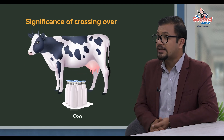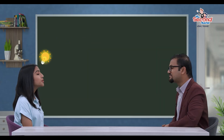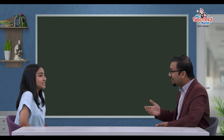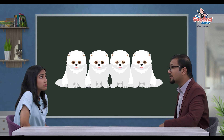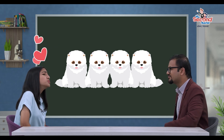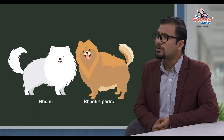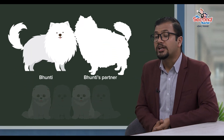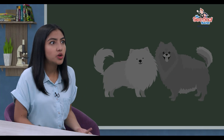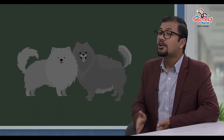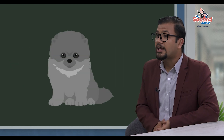Animal breeders can produce animals for their milk, their meat, and chickens, etc. There are many animal breeders in the market, so they can breed their animals. For example, to breed dogs for yellow-colored dogs — if both parents are yellow-colored dogs, the puppies will also be yellow-colored dogs.